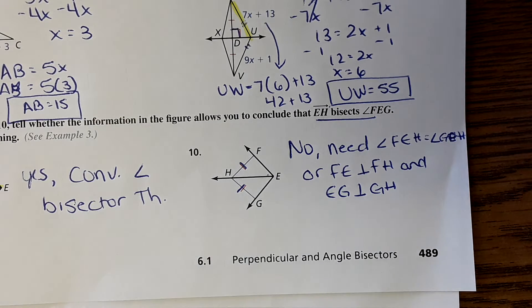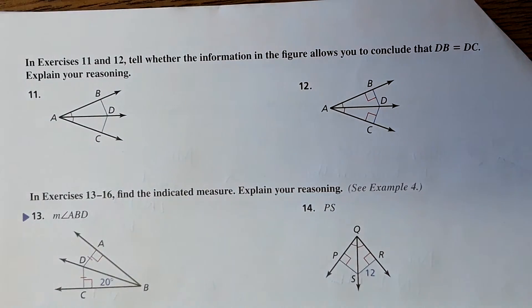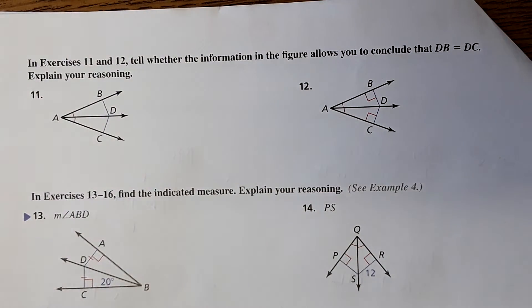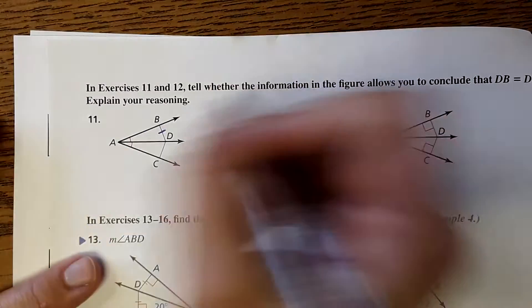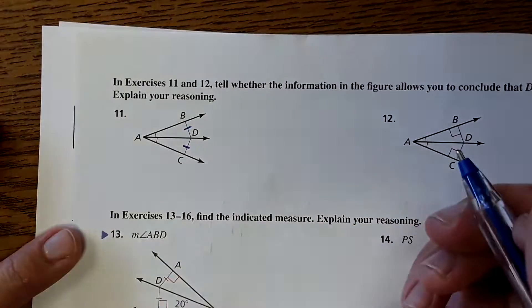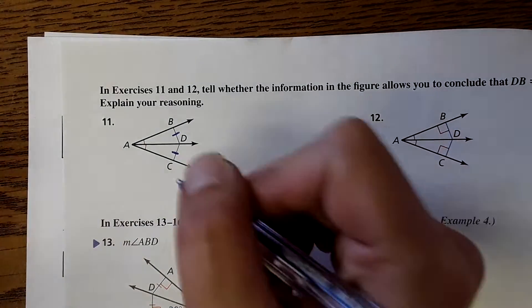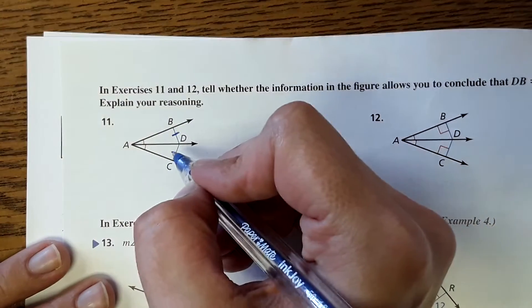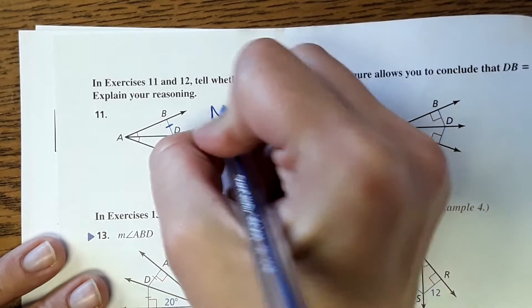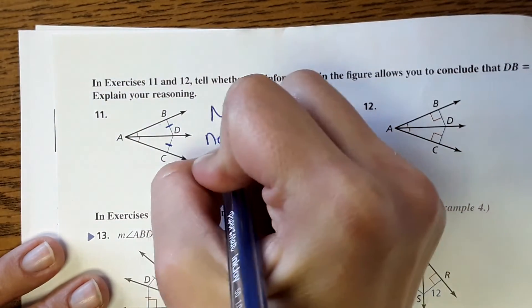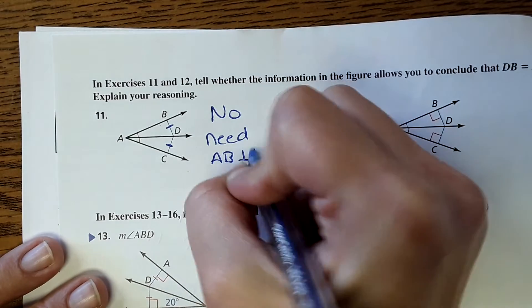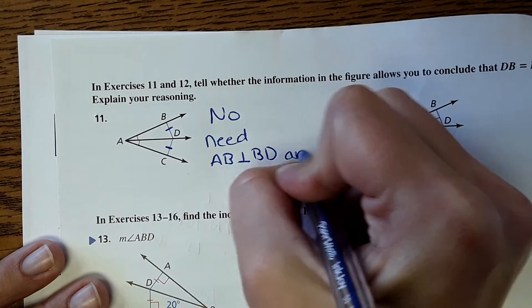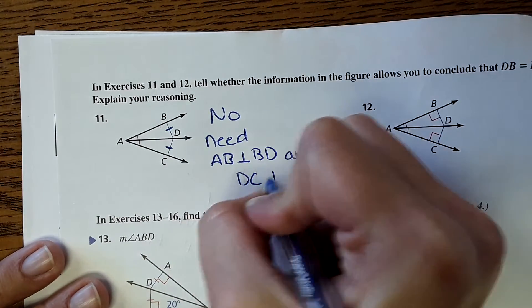Next page — number 11 is asking whether we can conclude that DB equals DC. Again, if two conditions are met, then we can prove the third. But in this case we don't know that this is perpendicular, so this is no. We need to know that AB is perpendicular to BD and DC is perpendicular to AC.